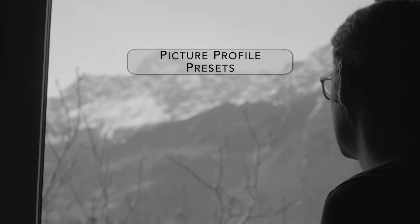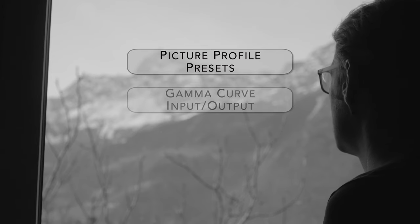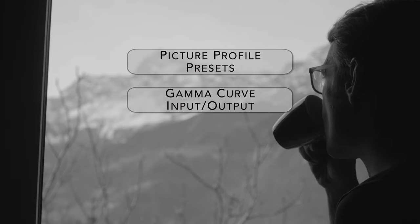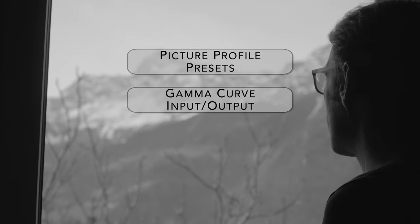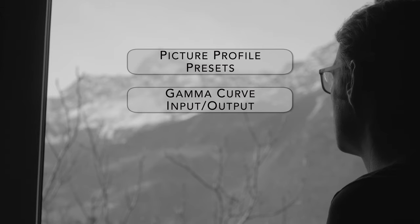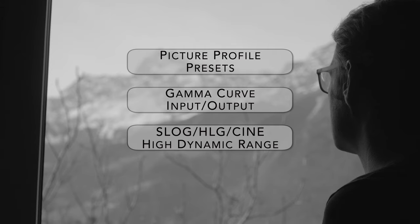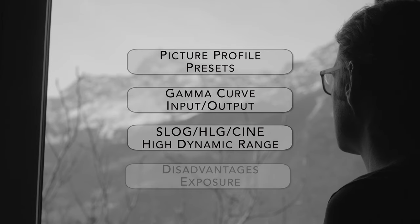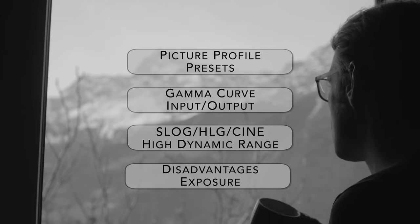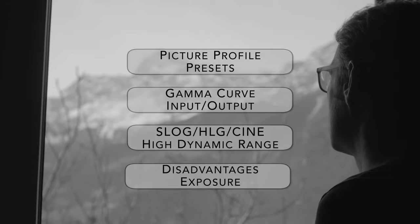Let's recap the most important points. Under Picture Profile you will find a number of presets that you can adjust to your own taste. The most important setting is the Gamma or gamma curve, which represents the relationship between the input signal and the video output signal. A standard gamma curve results in recordings with a very limited dynamic range. The gamma curves S-Log, HLG, and Cine lead to a higher dynamic range, but the shots have to be graded. Gamma curves such as S-Log only make sense if a higher dynamic range is required, as they also have disadvantages like image noise and extensive grading, and the image should be exposed differently for optimal results. That's it for today — if the video was interesting, give me a like and see you next time!